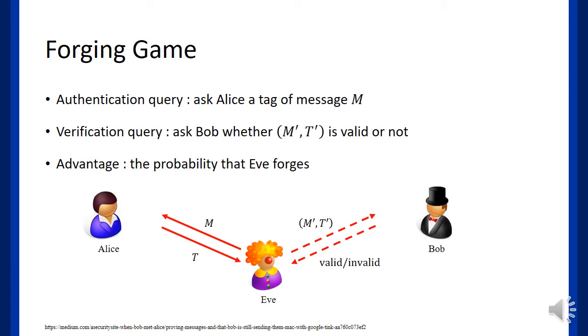The unforgeability can be modeled as a forging game. In the forging game, Eve can ask Alice a valid tag for message M, which is called an authentication query, and can ask Bob whether M' and T' is valid or not, which is called a verification query. The forging advantage is defined as the probability that Eve forges.